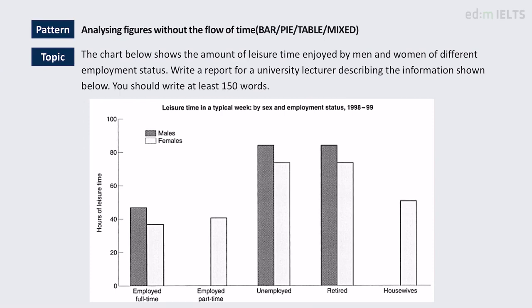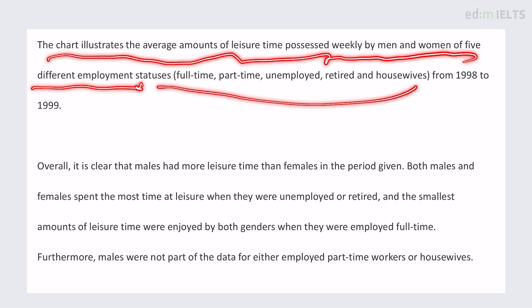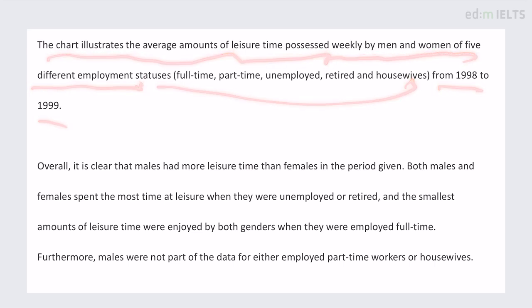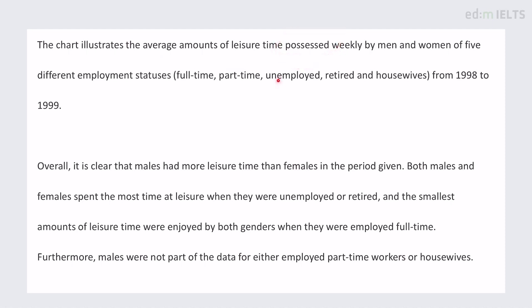So I'll take a look and tell you what score I would give it. 'The chart illustrates the average amounts of leisure time possessed weekly by men and women of five different employment statuses' — says what they are — 'from 1988 to 1999.' It's kind of more like covering that period rather than looking at separate data for both years, but it's okay enough, I think. 'Average amounts of time' — good word 'possessed.' There's nothing that desperately needs to be changed. It's pretty good. From memory, this one might be a rewrite, so the quality is pretty high at times.